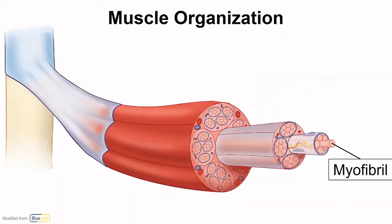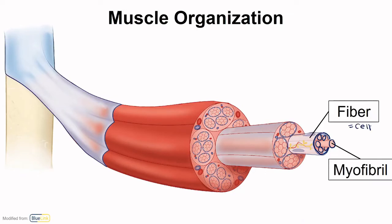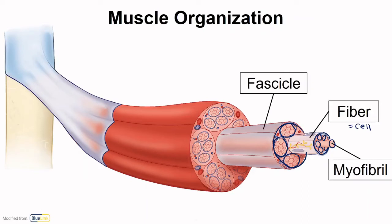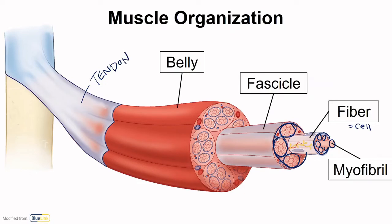Muscle fibers, which are the muscle cell, contain myofibrils. So many myofibrils make up one muscle fiber. Muscle fibers are organized into a muscle fascicle, and a group of fascicles makes up the muscle we would see at a gross anatomical level, called a muscle belly. From the muscle belly, this is where the tendon is, attaching the muscle to the bone.